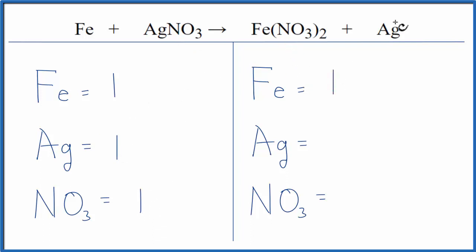On the product side, one iron, one silver, and then two of these nitrate ions, these NO3s. So we'll put a two here. So everything's balanced except the nitrate ion.